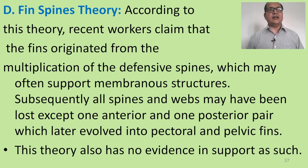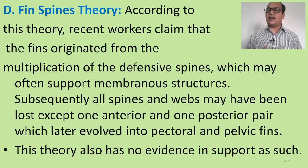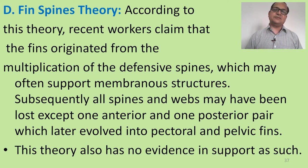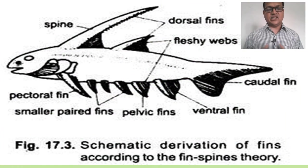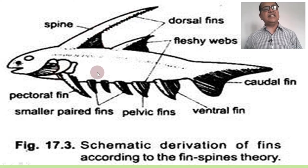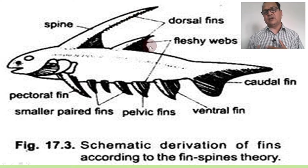The fourth theory is the fin spine theory. According to this theory, recent workers claim that the fins originated from the multiplication of defensive spines. Multiplication of spines gave rise to the fins, which may support a membranous structure. Subsequently, all spines and webs may have been lost except one anterior and one posterior pair, which later evolved into the pectoral fin and pelvic fin. This theory also has no supporting evidence. The diagram shows firstly the spines originated, and then a flap-like structure developed between the spines, which becomes a fin.